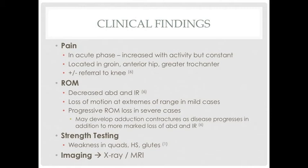Patients report constant pain increased with activity, localized to the groin, anterior hip, and greater trochanter regions. Pain may or may not be referred down to the knee. A decrease in hip range of motion at extremes can be observed, with marked decrease in abduction and internal rotation. Severe cases may portray an adduction contracture. Decreased strength aligns with the atrophy observed in the quads, hamstrings, and glutes. X-rays and MRIs are the most common imaging techniques used in evaluation and monitoring of LCP.